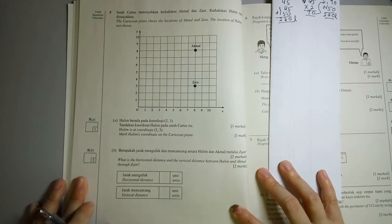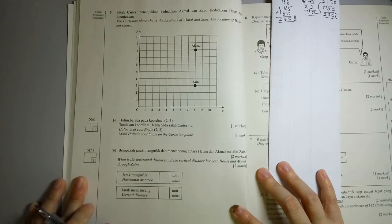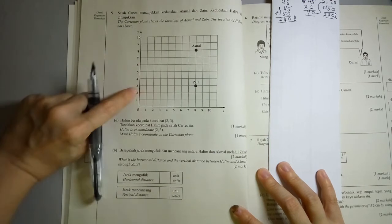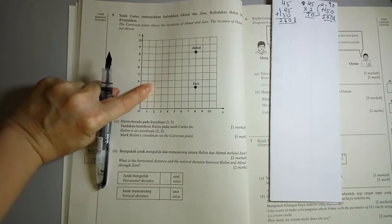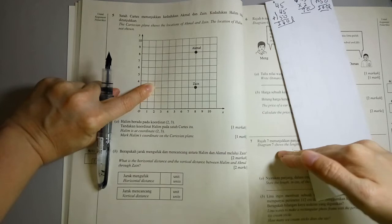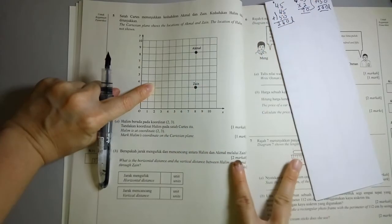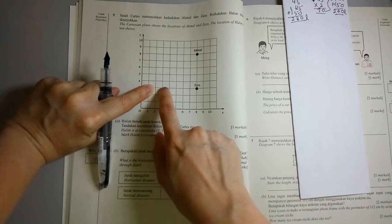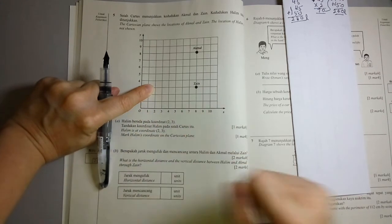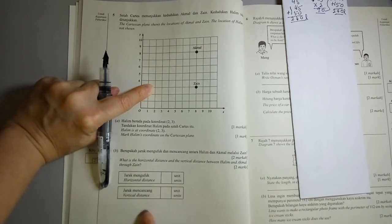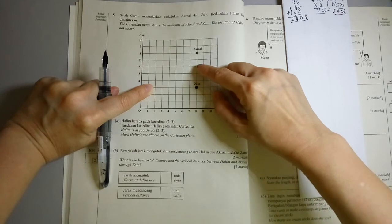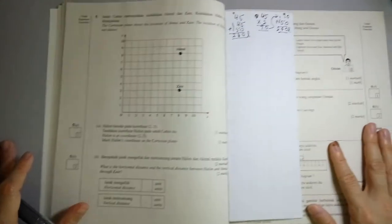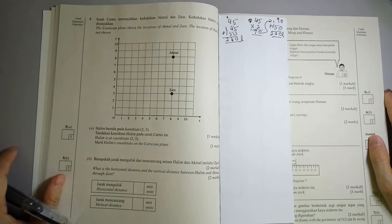So let's see. What's the horizontal distance and the vertical distance between Halim and Akmal through Zain. So Halim is right here. So horizontal, do you remember this? Horizontal is flat. Vertical, you see the V? It cuts down. So it's standing. So Halim is here. Horizontal distance would be 1, 2, 3, 4, 5, 6 units. So you write 6 right here. Vertical distance would be 1, 2, 3, 4, 5 units. So that's right here. It's not that tough. And that way, we have already covered 5 questions. Wow! So these are rather easy.